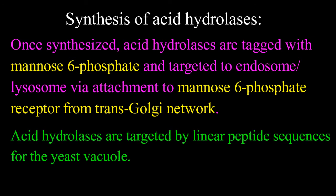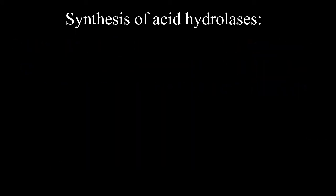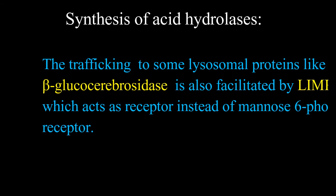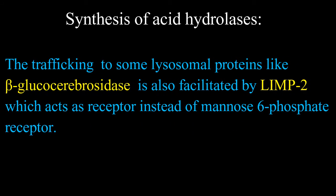Acid hydrolases are targeted by linear peptide sequences for the yeast vacuole. The trafficking of some lysosomal proteins like beta-glucocerebrosidase is also facilitated by LIMP-2, which acts as a receptor instead of the mannose-6-phosphate receptor.